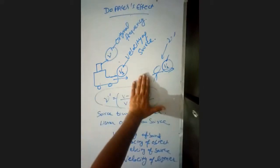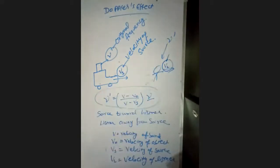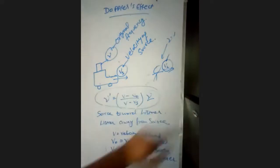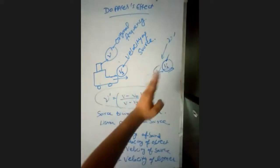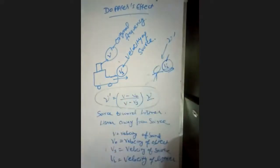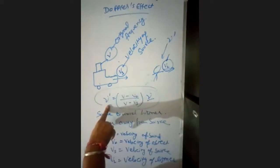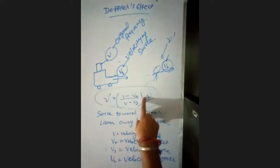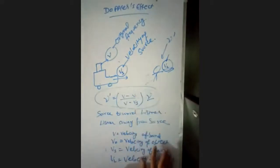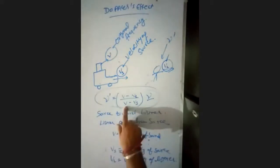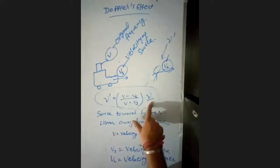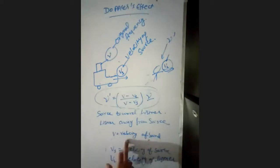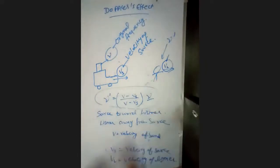This formula applies when the source is moving towards the listener and the listener is moving away from the source. The formula is: apparent frequency ν' equals (V − VL) divided by (V − Vs) multiplied by the real frequency ν. Here V is the velocity of sound, Vs is the velocity of source, and VL is the velocity of listener. This is the desired formula for Doppler's effect.